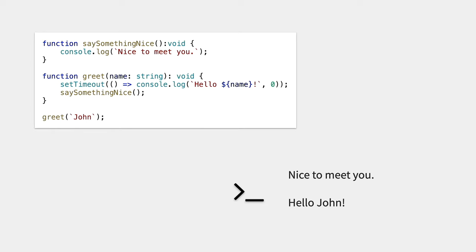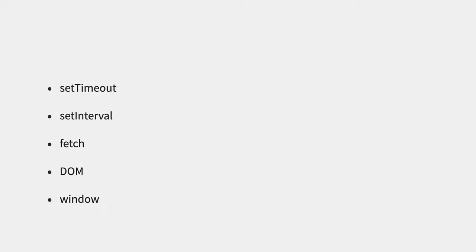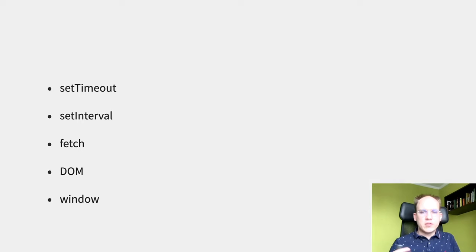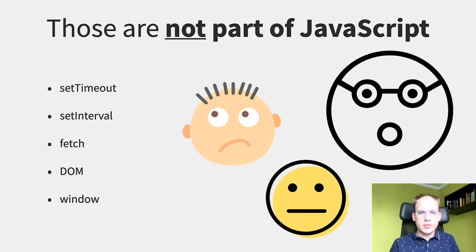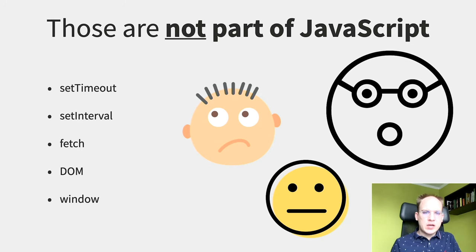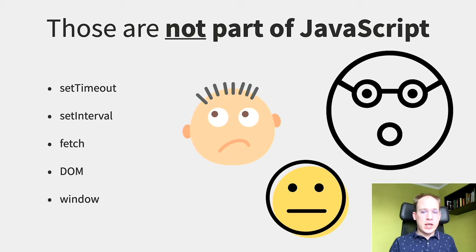Why does this happen? To understand that, you need to know that setTimeout, setInterval, DOM events, window objects, and much more of what you think is part of JavaScript is in fact not part of JavaScript. All of those are external APIs called by JavaScript, and those external APIs provide JavaScript with the callback or the result of the action they performed. This callback is kept in the callback queue, and when JavaScript doesn't have anything to execute from its synchronous code, it picks up things from the callback queue to execute them.